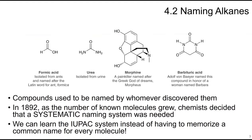Back in the olden days, compounds were named by whoever discovered them, so they could name them whatever they wanted. Formic acid came from ants, named after the Latin word 'formica.' Urea was isolated from urine. Morphine was a painkiller named after the Greek god of dreams, Morpheus. In 1892, chemists decided a systematic naming system was needed so we weren't naming things arbitrarily.